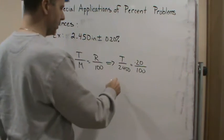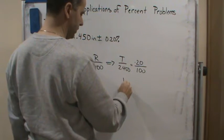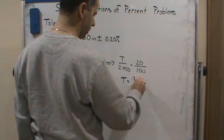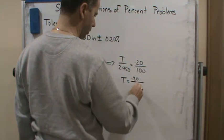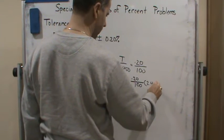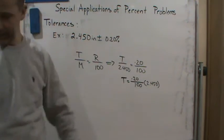And so now what I'm going to do is I'm going to multiply both sides by 2.450, and so T is going to equal 0.20 over 100 times 2.450. And so if I put that in my calculator,